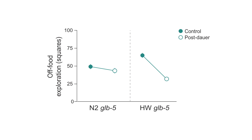We observed this long-term plasticity in other wild isolates too, but not in the N2 domesticated strain. We wondered if this is an effect of domestication-associated genetic changes in N2, so we looked at one candidate protein called globin-5, which is involved in sensing ambient oxygen. The N2 strain has a non-functional version of globin-5 whereas wild isolates have a functional protein. We saw that globin-5 is involved in this long-term plasticity, and by expressing the ancestral wild form of globin-5 in an N2 background we could rescue this long-term plasticity in the N2 strain.